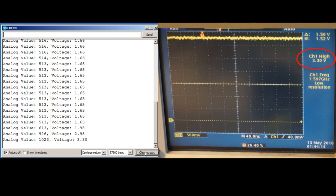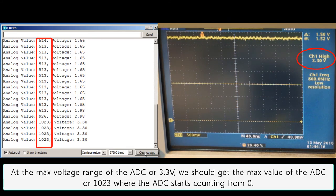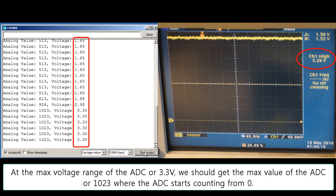Next, we take it all the way up to 3.3 volts, which is the max value of the ADC. It reads 1023, which is 2 to the 10, minus 1, or the max value of the 10-bit ADC.